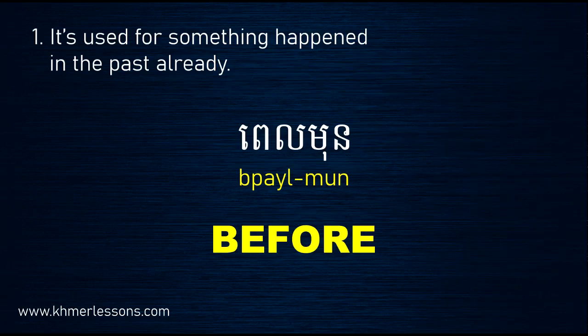Number one: use for something happened in the past already. So when you use the word 'before' in this case, in Khmer you use this word. In Khmer, you say 'Pêl Môn.' Pêl Môn — before. Now let's see some examples with this word together.